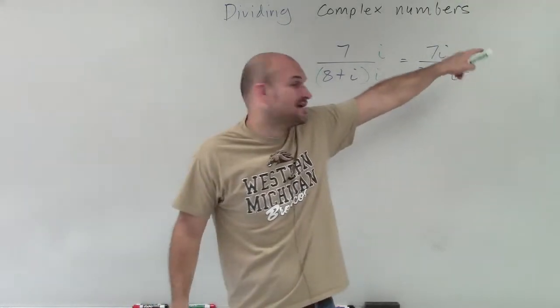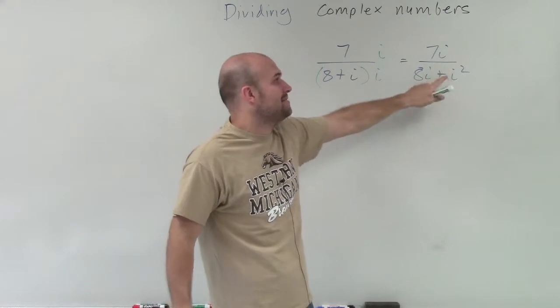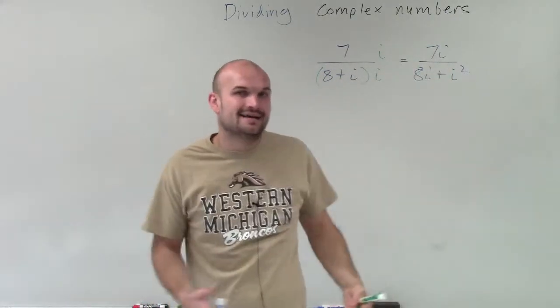what I'll have is I get 7i over 8i plus i squared. Well, yes, the i squared gets eliminated as negative 1, but now we have an 8i. And if we just keep on multiplying by i in our denominator, we're always going to have an i in the denominator.